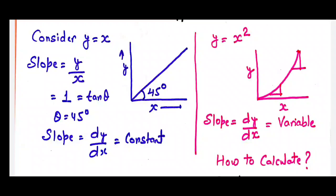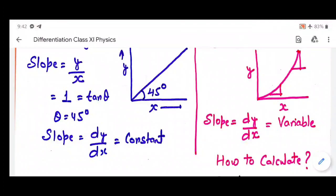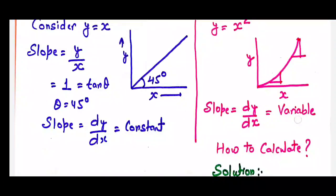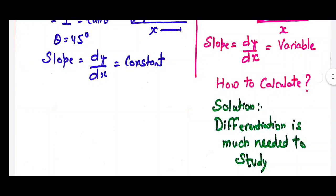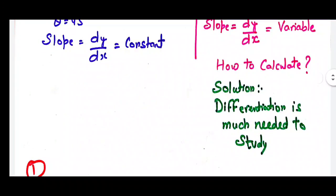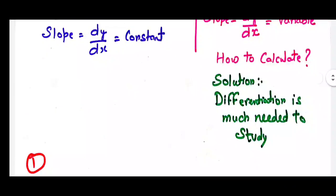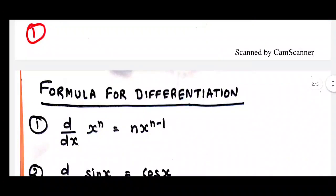Now consider another function y equal to x squared. If you plot it you're going to get a parabola. If you obtain the slope at different points, the slope will be different at each point. The slope is obtained by calculating the differential coefficient of y with respect to x. So differentiation is much needed if you want to obtain slope or study variation.